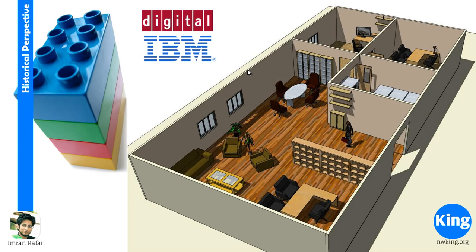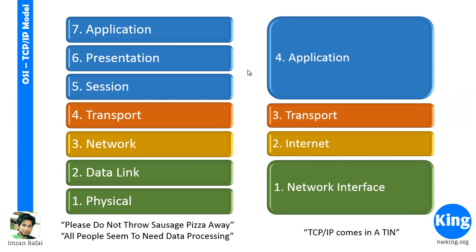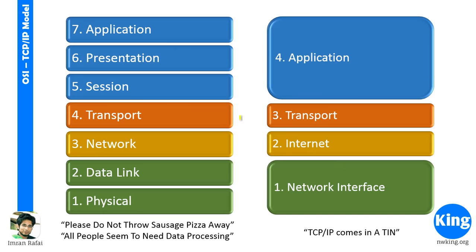Knowing what we know now, let's get into the models. Let's understand how models work, what layers are involved, and compare TCP/IP and the OSI model. What you see on the left is the OSI model; what you see on the right is the TCP/IP model. I have color-coded it to compare between the two. As a student of networking, all of you should know the layers by heart — you need to know exactly the sequence of the layers.